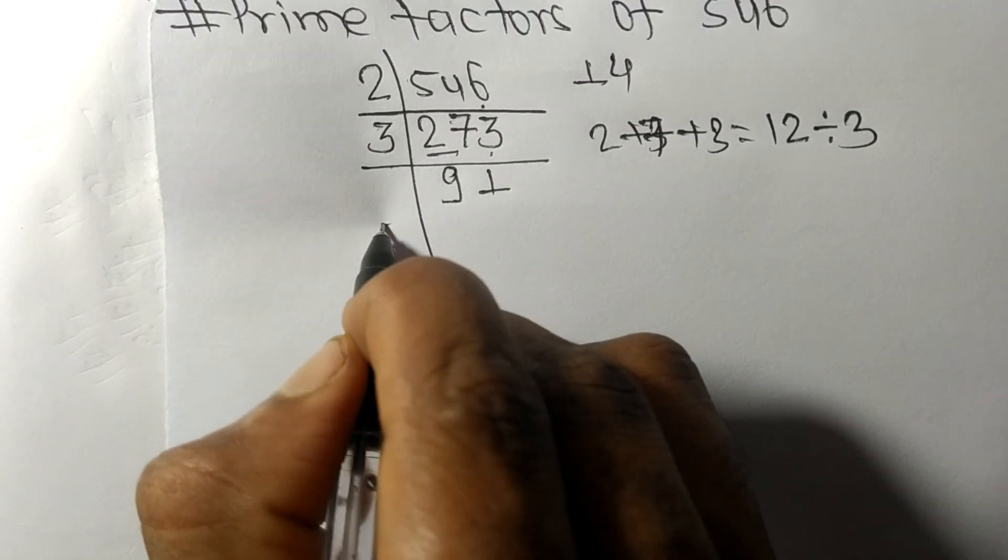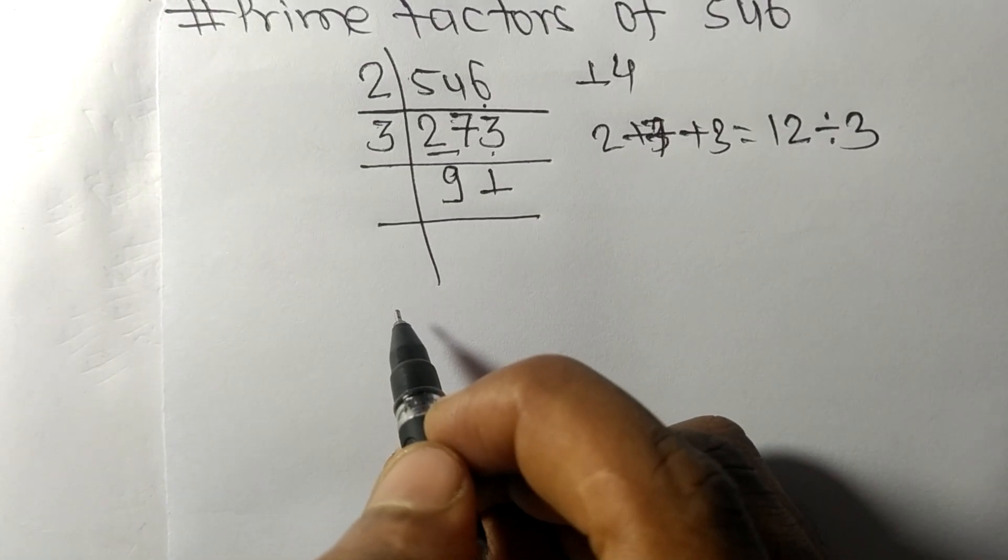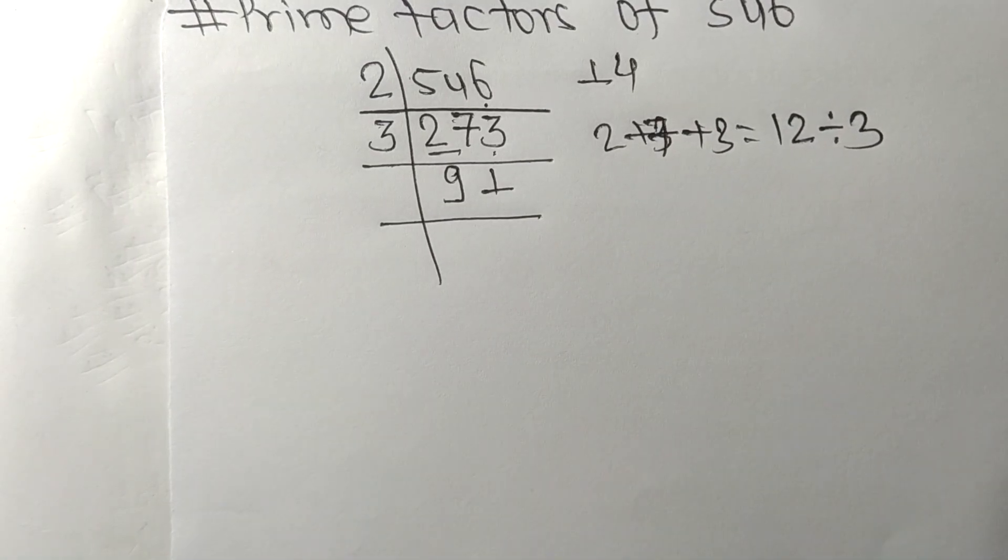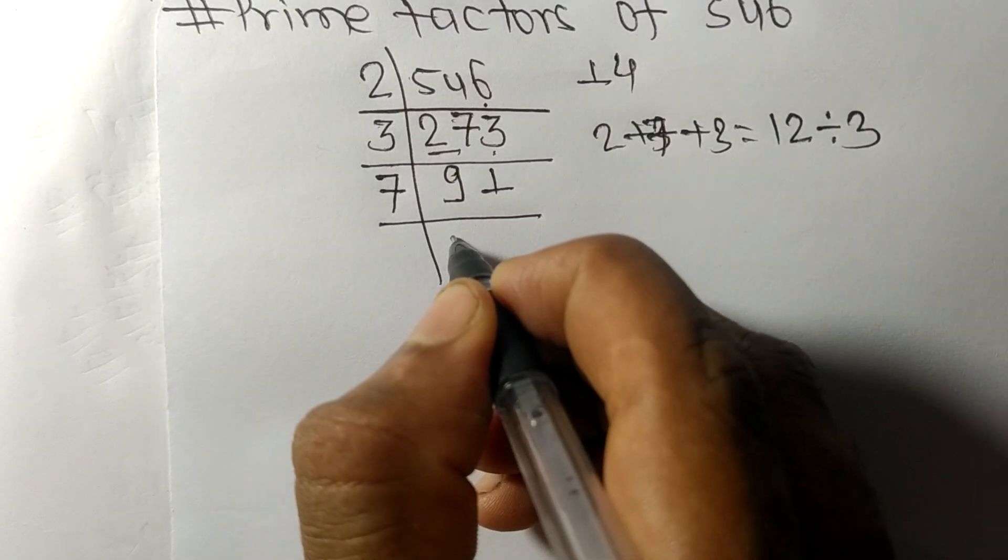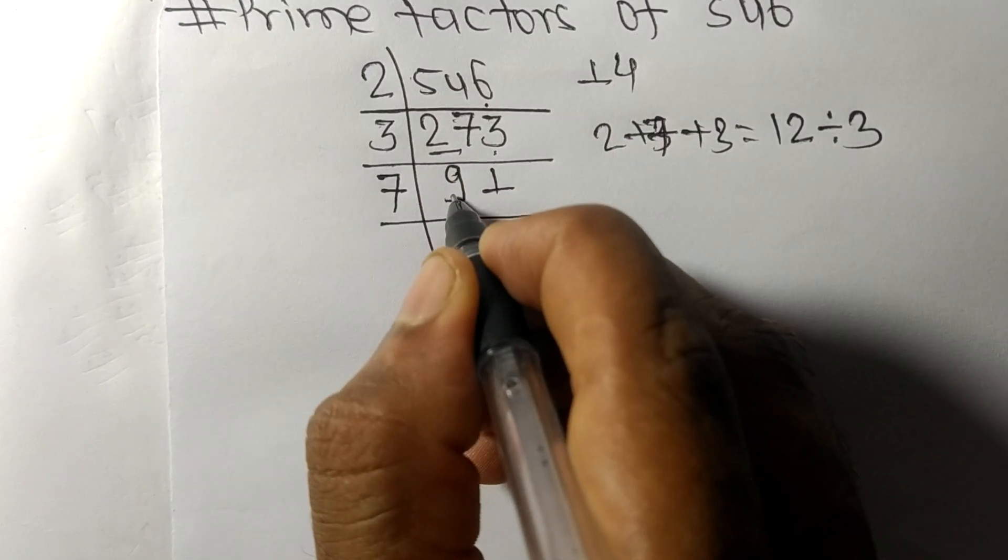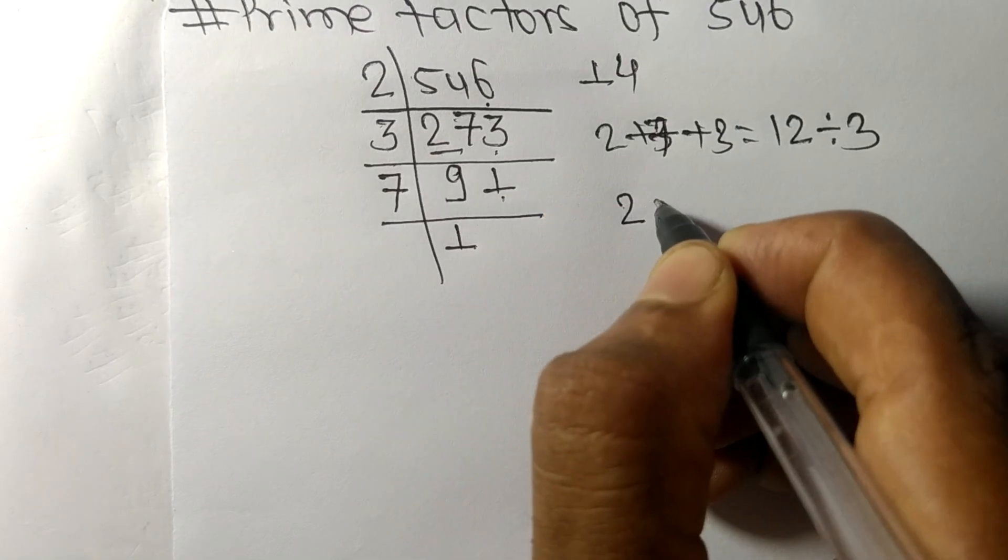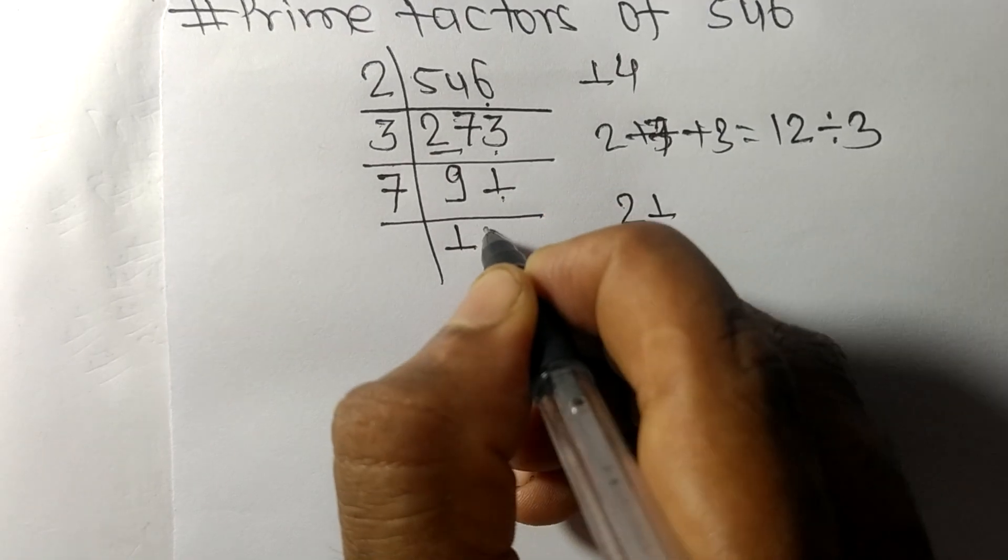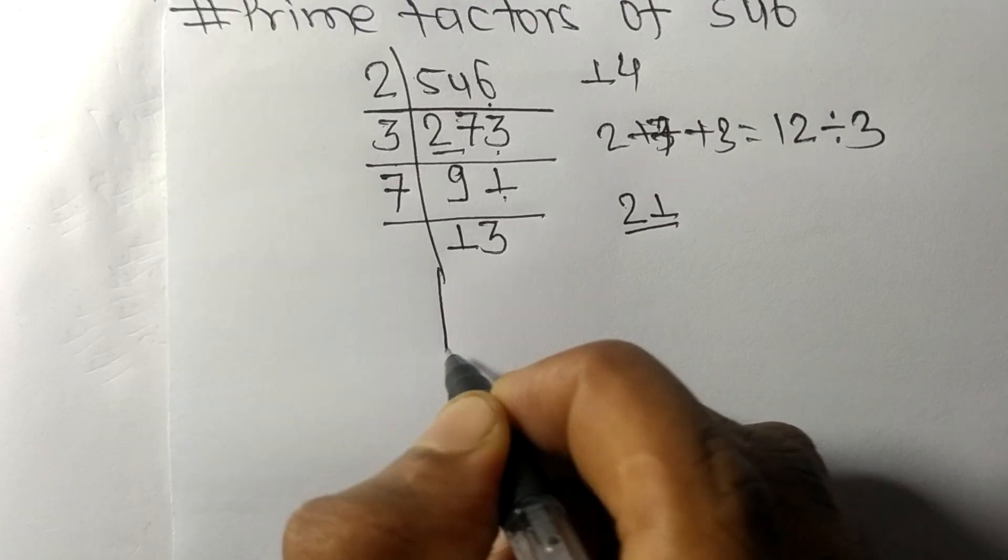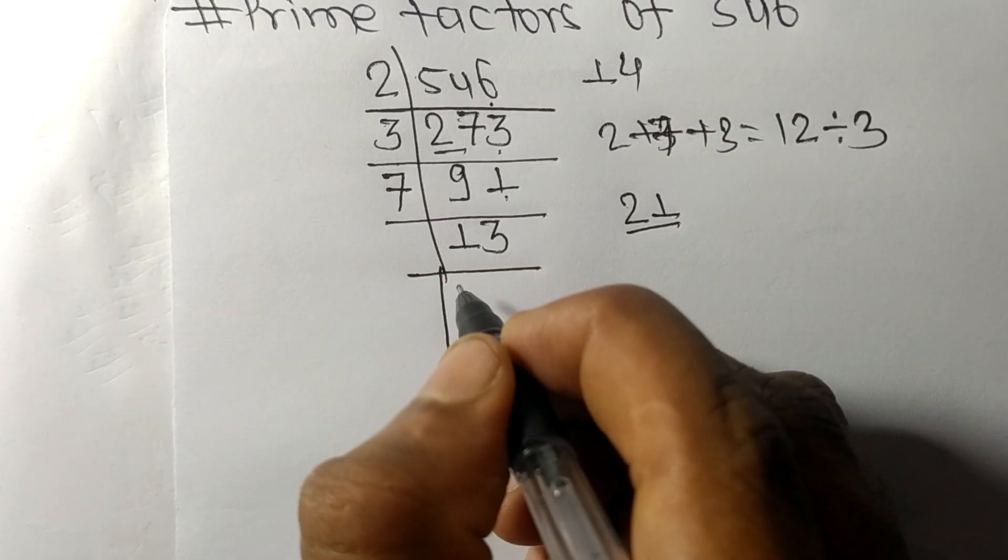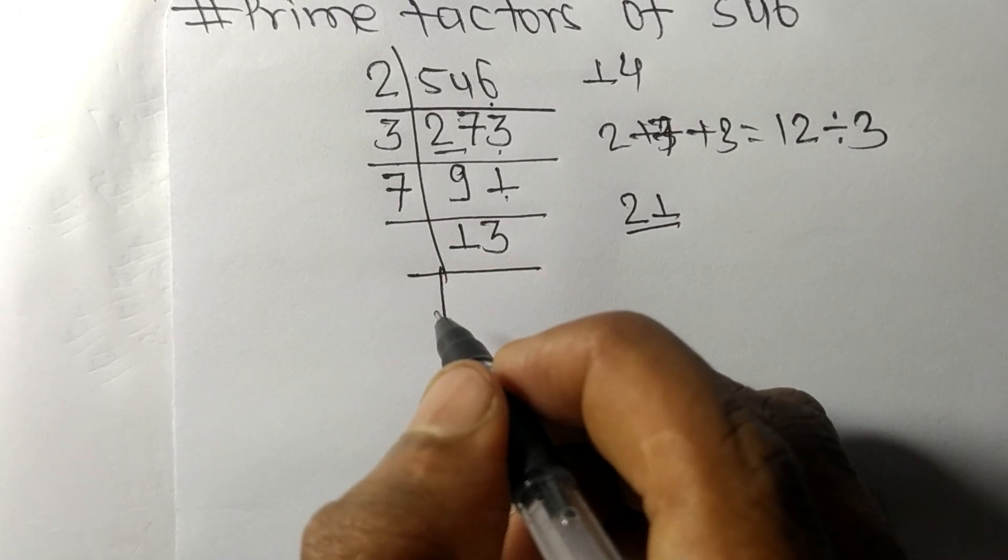7 times 1 equals 7 with remainder 2, and 7 times 3 equals 21. Now we have 13, which is a prime number.